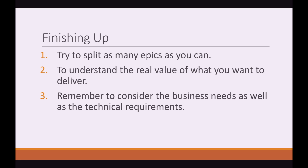So that was an example of how you would break down a PBI. Always remember, you need to try and split as many Epics as you can, so you can understand the real value of what you want to deliver. There could be a PBI that is not clear, and once you start breaking it down, you realize there are so many User Stories — it could even be two Epics. It's very vital that you make each PBI as small as you can, and always consider the business needs as well as the technical requirements. This is why the Product Owner, the Dev Team, and the Scrum Master are all together in this meeting.